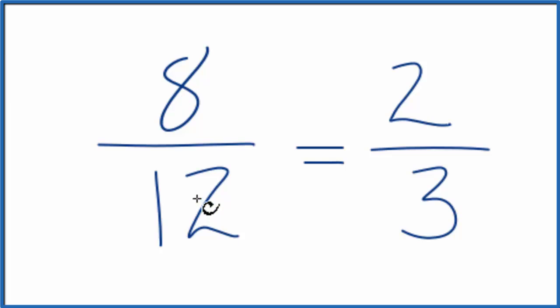If you divide 8 by 12 and 2 by 3, you will get the same number. These are equivalent fractions, we just have a different numerator and denominator.